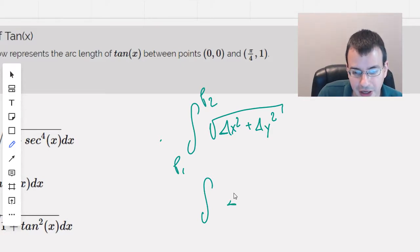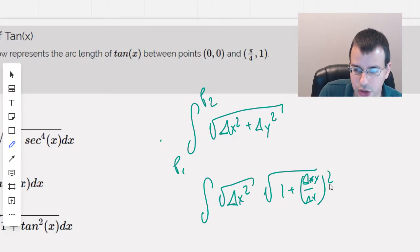So then we factor out the delta x squared, which is square rooted, but then we're left with 1 plus delta y over delta x, quantity squared.